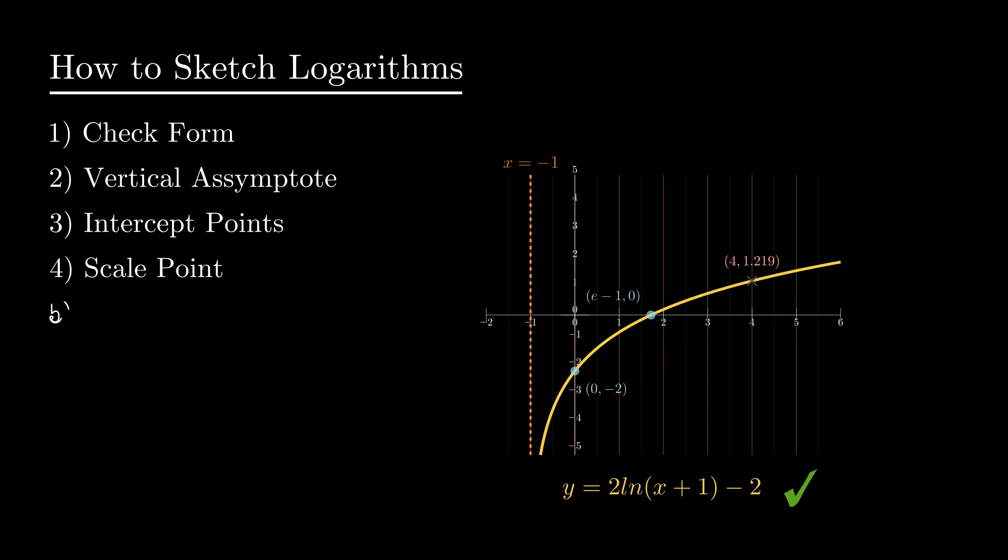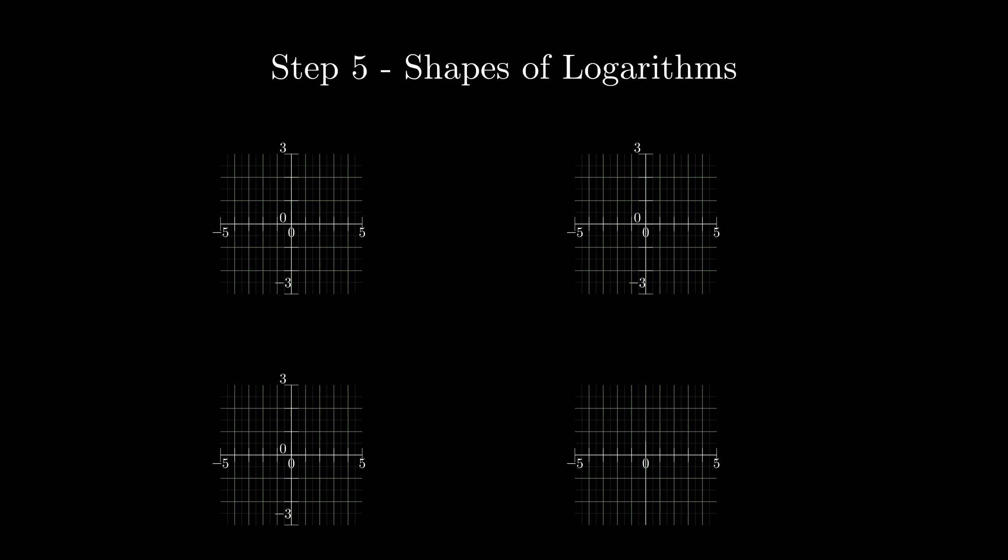Our last step is to verify the shape of the log graph. What do the A and B values tell us? To take a closer look at this step five process, we've got four cases for the shape of a logarithm.